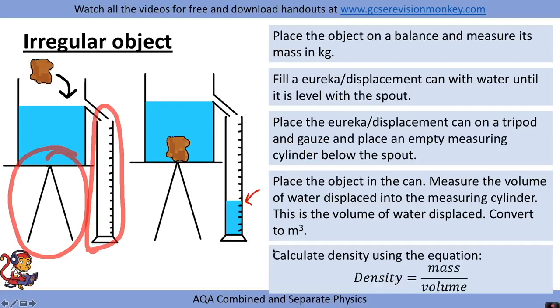Put the mass into the equation, divide it by the volume, and you will be able to calculate the density in kilograms per meters cubed of the irregular object.